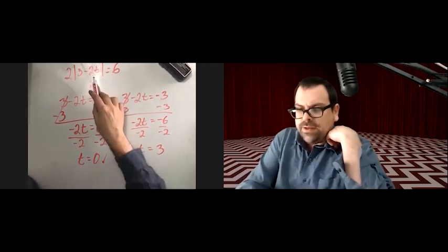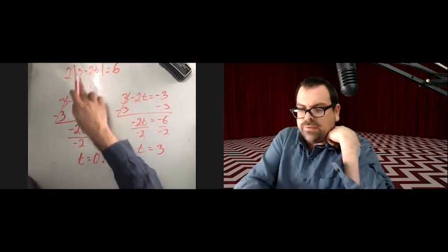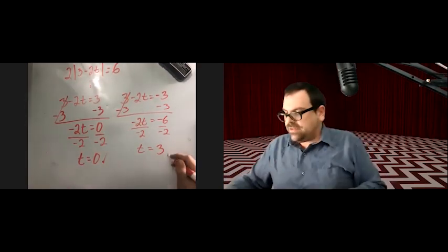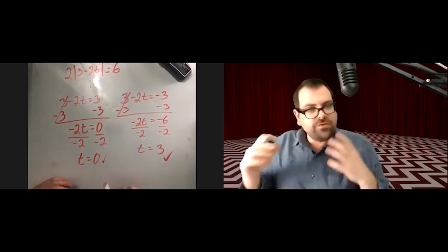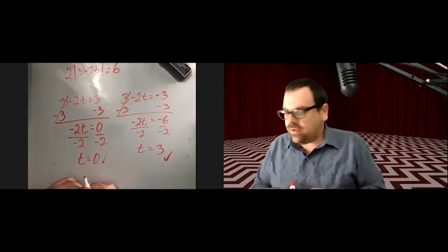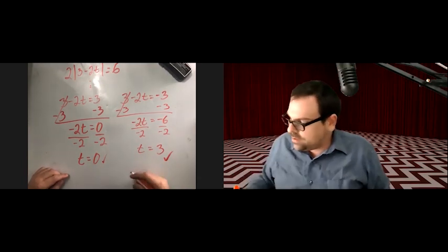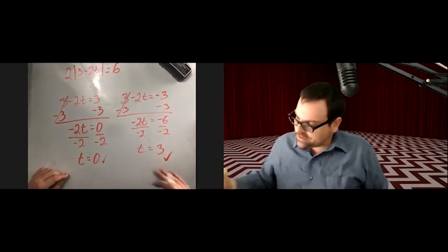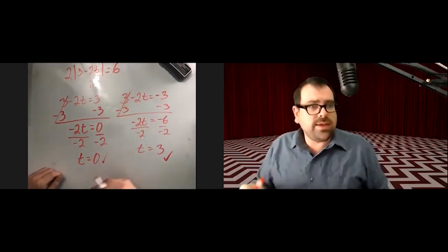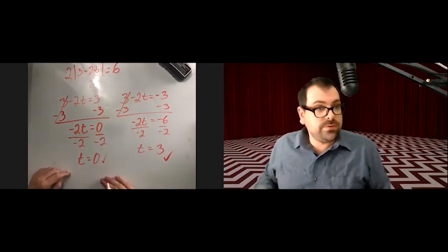Check both in the original: if t equals 0, then 3 minus 0 is 3, the absolute value of 3 is 3, and 2 times 3 is 6 — checks. If t equals 3, then 3 minus 6 is negative 3, the absolute value of negative 3 is 3, and 2 times 3 is 6 — checks. The solution set is {0, 3}.